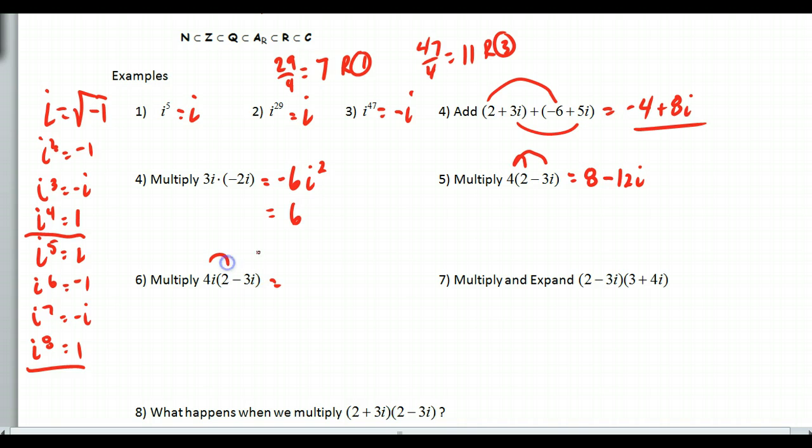This one, number 6. If I distribute here, I can take the 2 times the 4, which is 8i. And then if I do this one, well, I'm going to start off with a negative, but then it's 4 times 3, which is my 12, and then I get i squared. But, what is i squared again? It's negative 1. So, this would be 8i plus 12. Negative, negative makes positive. And if I want to put this in complex form, I'd call it 12 plus 8i.